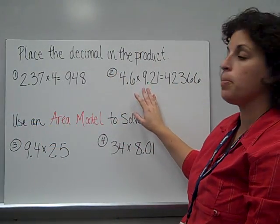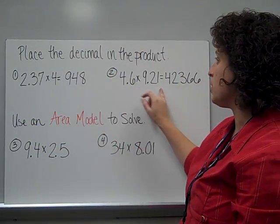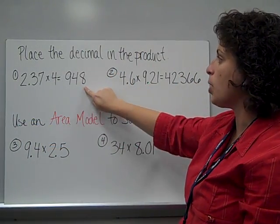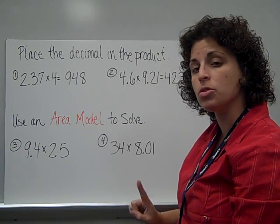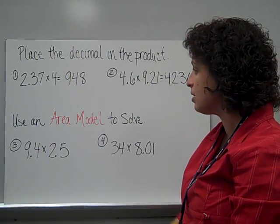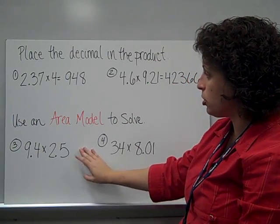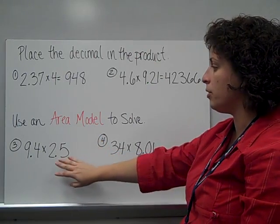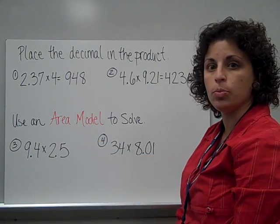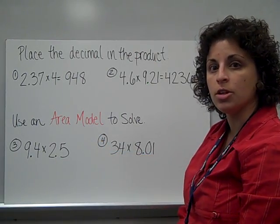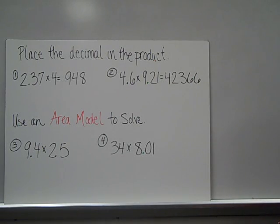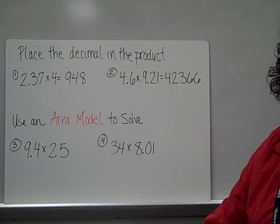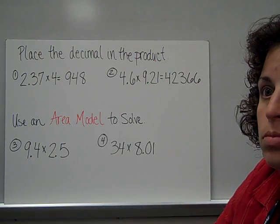I want you to place the decimal on each of these products. The digits are right, but they're missing the decimal, so please fill that in. Then I want you to use the area model to solve these two problems in your math journal.